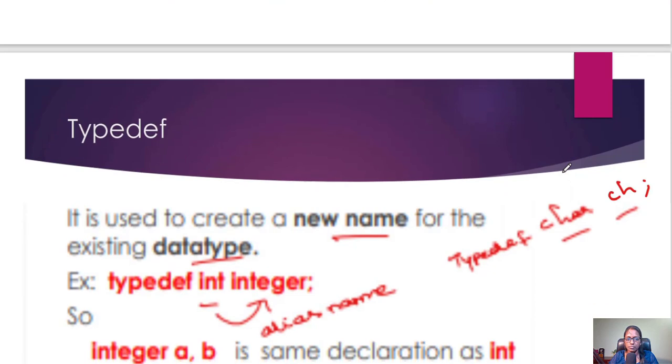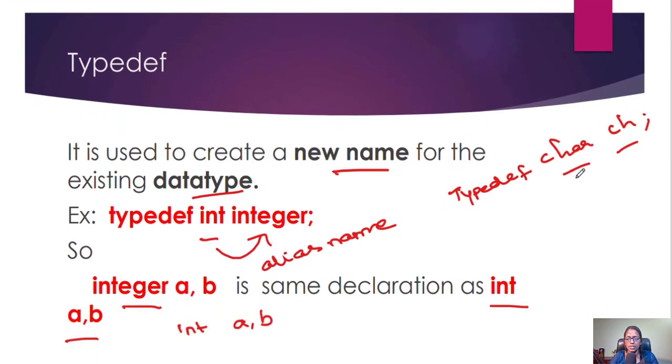The next concept is typedef, which is used to create a new name for the existing data type. For example, typedef int integer. Previously, if I want to declare the integer data type...